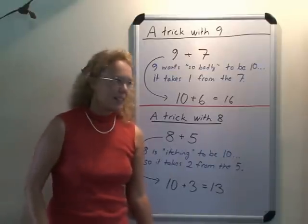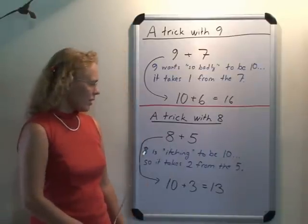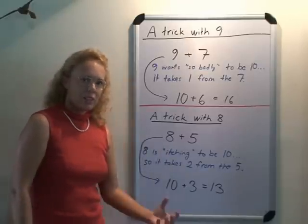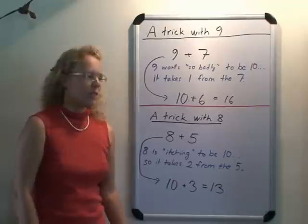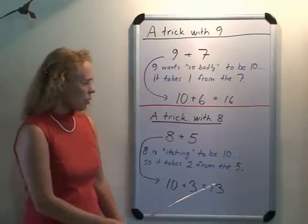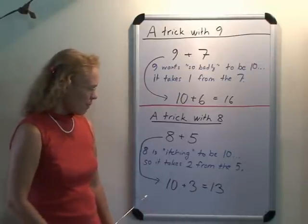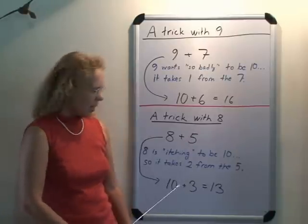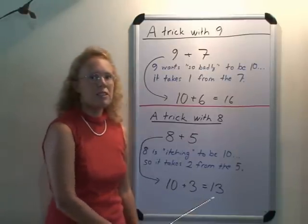You can use the same trick with eight. Just tell them that eight really wants to be ten, or is itching to be ten, and eight needs to take away two from some other number. That takes two from the five or whatever you are adding, and eight becomes ten, five becomes three, and then you add ten plus three equals thirteen.